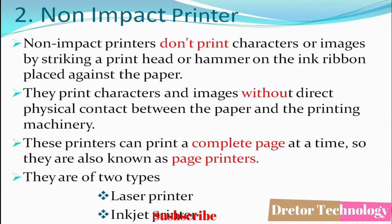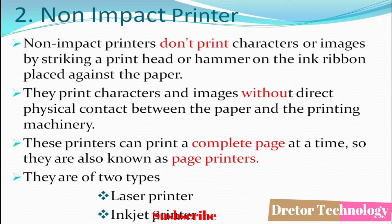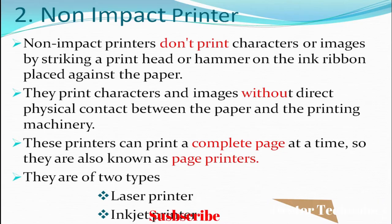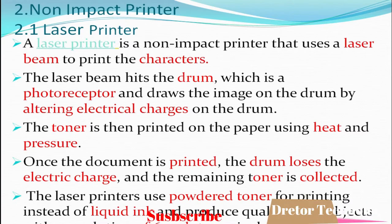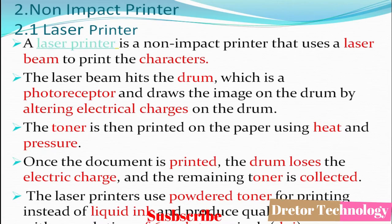The second type of printer is the non-impact printer. Non-impact printers do not print characters or images by striking a print head or hammer on an ink ribbon. Instead, they print characters and images without direct physical contact between the paper and the printing machinery. The printer can print a complete page at a time, so they are also known as page printers. There are two types: laser printer and inkjet printer.